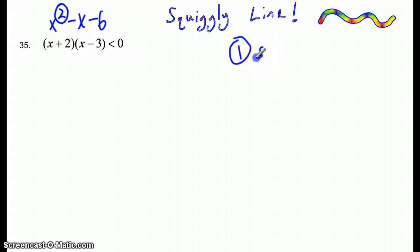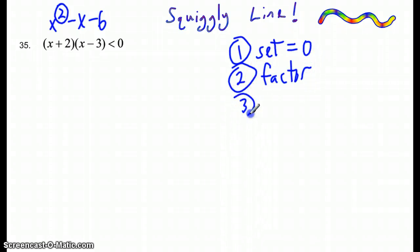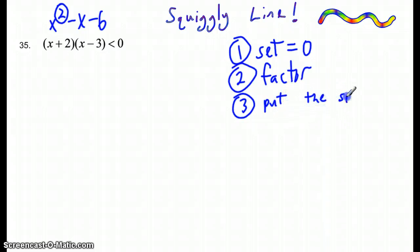First step: set equal to 0. Well, that's already been done for us here — it's already set equal to 0. Second step: factor. That's already been done for us. So this problem is kind of ready, set, and waiting. So we really need to do the third step, which is to put the solutions on the number line.